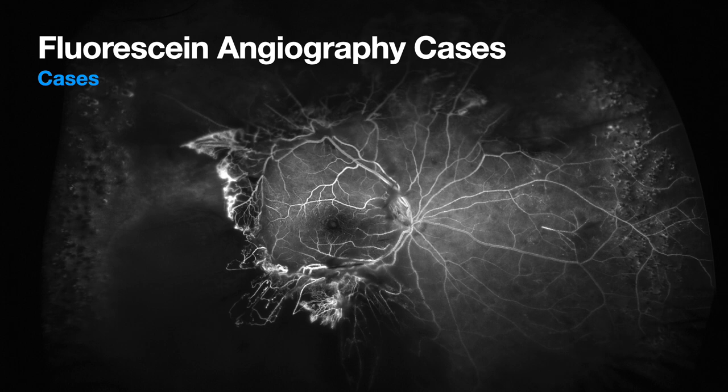The other eye has similar findings but worse — now there's a tractional retinal detachment (TRD). Inferior temporally, it's dark and you can't see detail — that's where the TRD is, kind of kidney-bean shaped. A lot more neovascular complex there, and the patient also had prior laser. This patient clearly needs more laser, and needs surgery in the right eye as well.